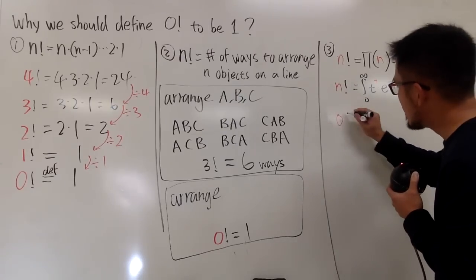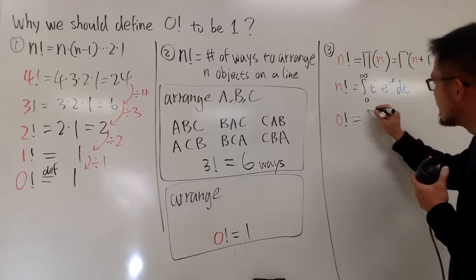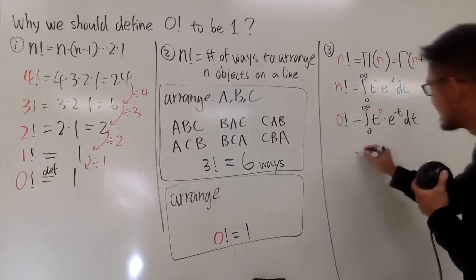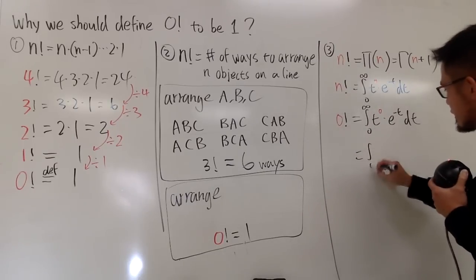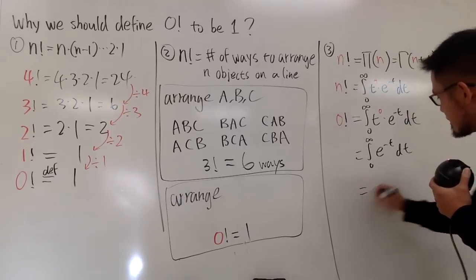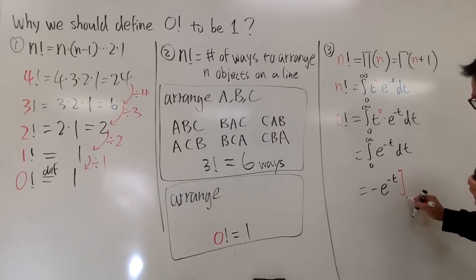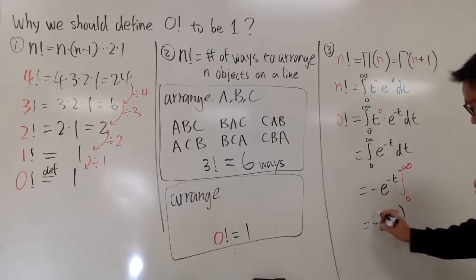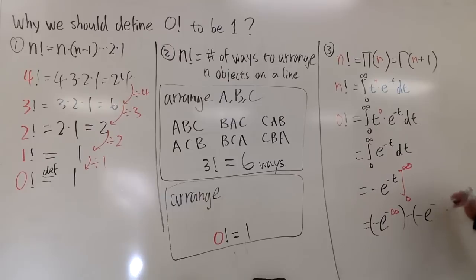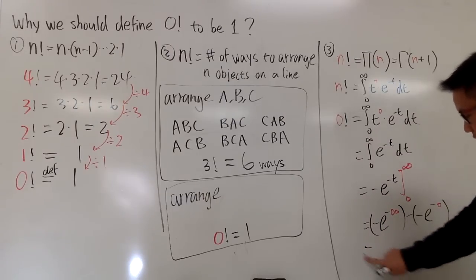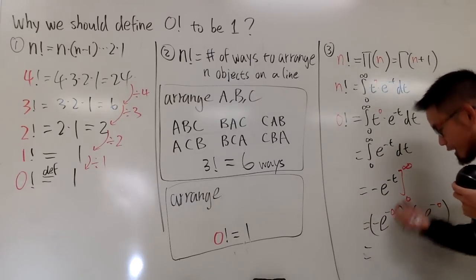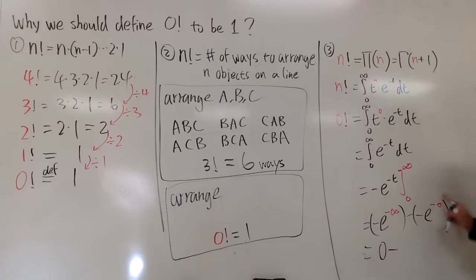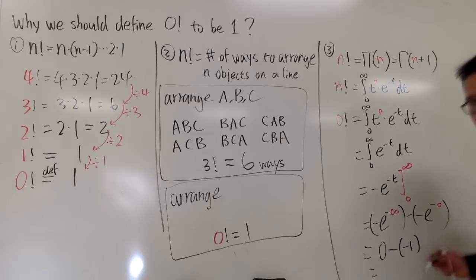To find 0 factorial, I plug in n equals 0: the integral from 0 to infinity of t to the 0th power times e to the negative t, dt. Since t to the 0 is just 1, this becomes the integral from 0 to infinity of e to the negative t, dt. Integrating gives negative e to the negative t, evaluated from 0 to infinity, which is negative e to the negative infinity minus negative e to the 0.